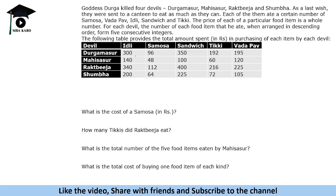When we are given the total amount spent, how do we figure out the number of items purchased? The total expense equals cost multiplied by number of items. This product should be a multiple of both numbers. The number of items will be an integer, and the cost is also given to be a whole number.